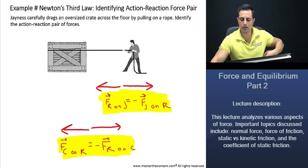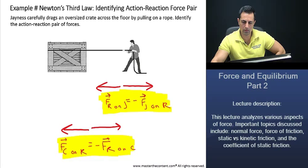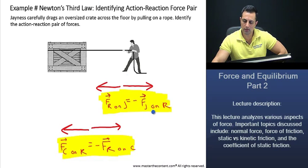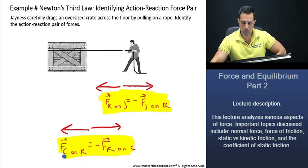The force of Janus acting on the rope is an action-reaction force pair with the force of the rope acting on Janus. And the force of the crate acting on the rope is an action-reaction force pair with the force of the rope acting on the crate.